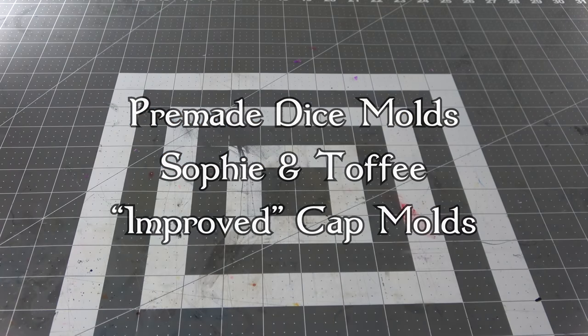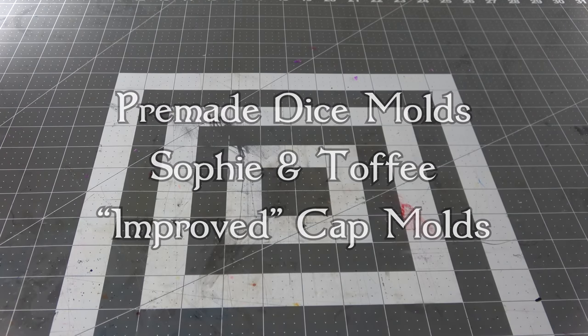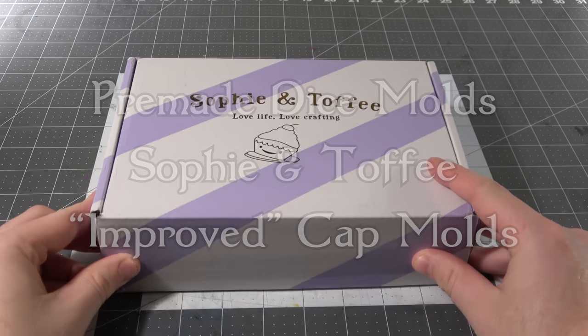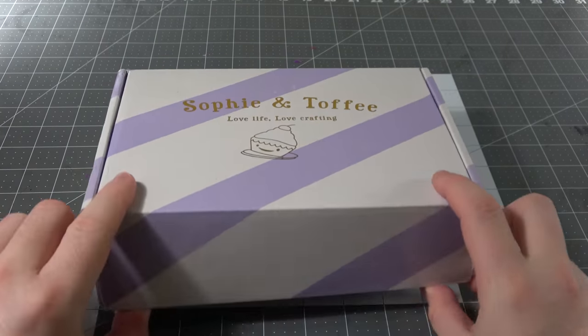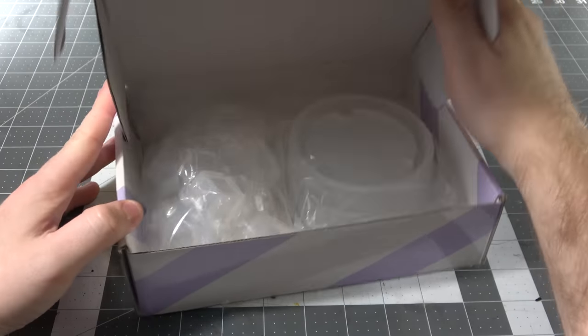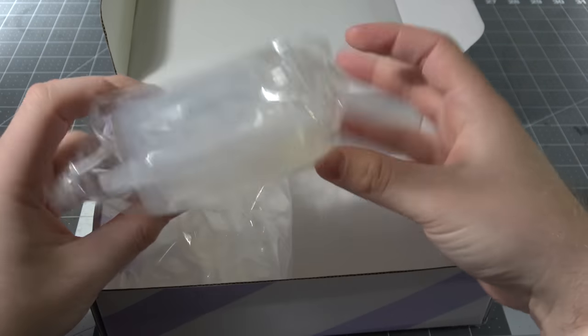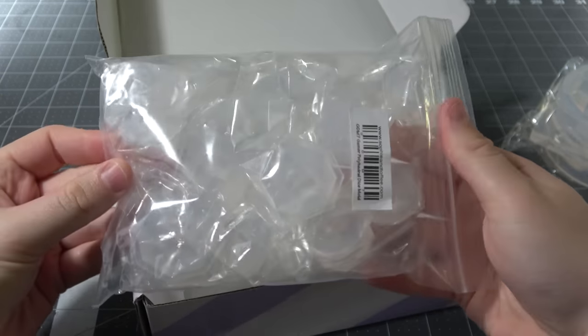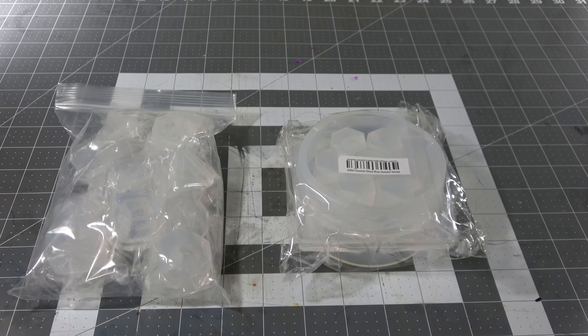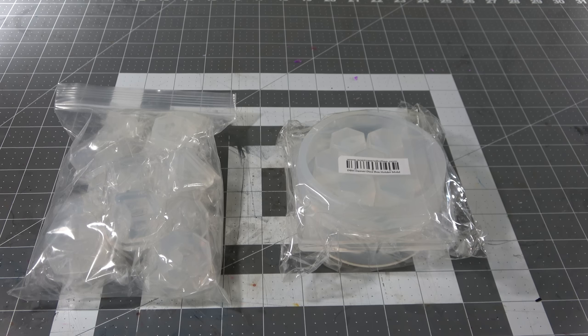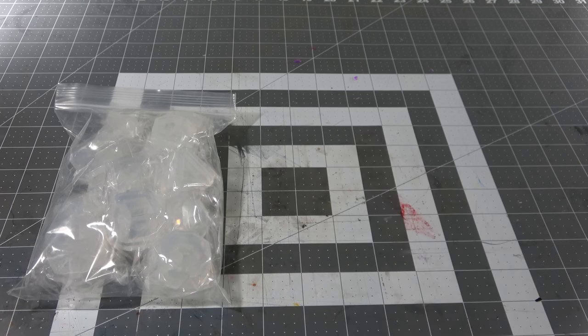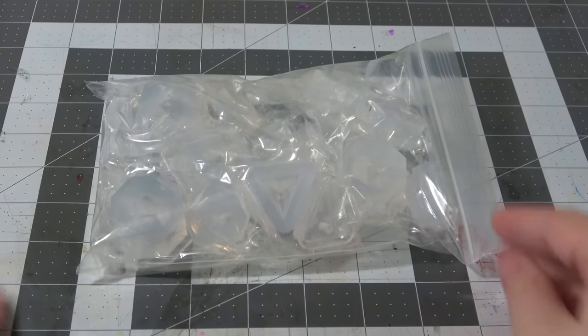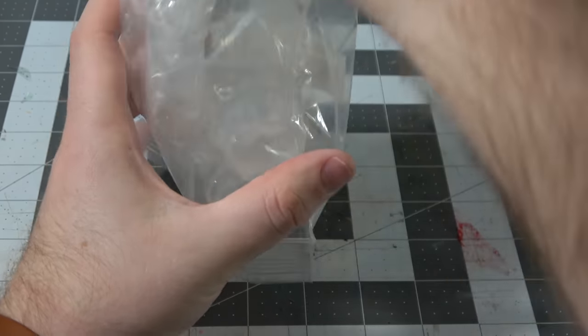If the intro wasn't evidence enough, today is round two for Sophie and Toffee's improved dice molds. I reviewed their original 7-die dice mold set a while back, and I wasn't terribly impressed. I recently ordered a few other molds from them, like their Dice Vault mold and their Mini Dice molds, and so I thought I would go ahead and order this set so that I could give it a second chance, because they've supposedly made a lot of improvements to it based off of suggestions from me and other people who've reviewed them.